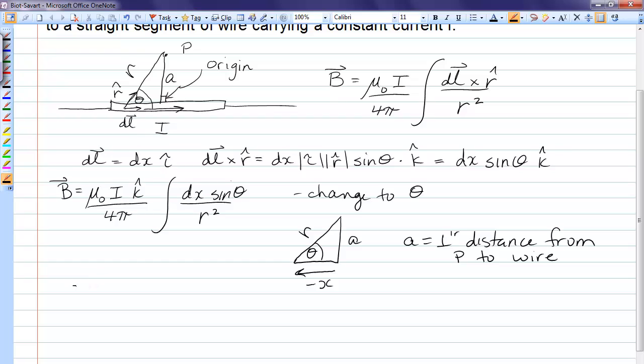So we have that sine theta is equal to a over r. So r must be a over sine theta or a cosecant theta. Okay that takes care of r.